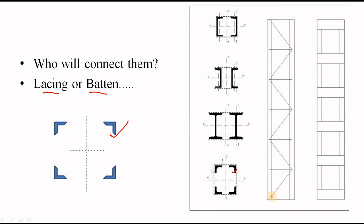But if you see in elevation, in case of lacing, you can see like this. But in case of batten, you see like this. As you can see here, that as component of the built-up section, the channel section has been used. In case of larger load, you can use the rolled I section as component of your built-up section. And then you can connect them by using lacing or batten.